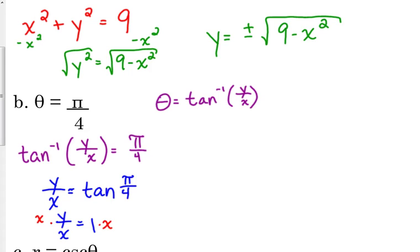Last step, solving for y, we multiply by x. So, y equals x is this function in rectangular form. Theta is equal to pi over 4 is equivalent to the function y equals x.